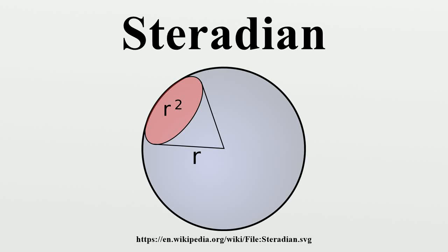The steradian, or square radian, is the SI unit of solid angle. It is used in three-dimensional geometry and is analogous to the radian, which quantifies planar angles. The name is derived from the Greek stereos for solid and the Latin radius for ray or beam.